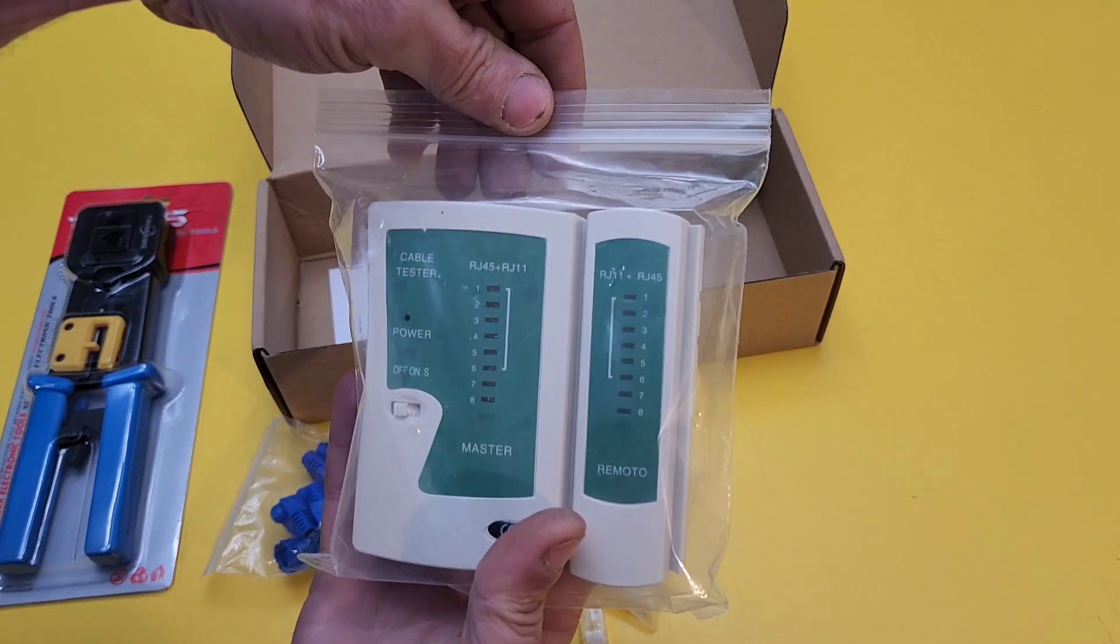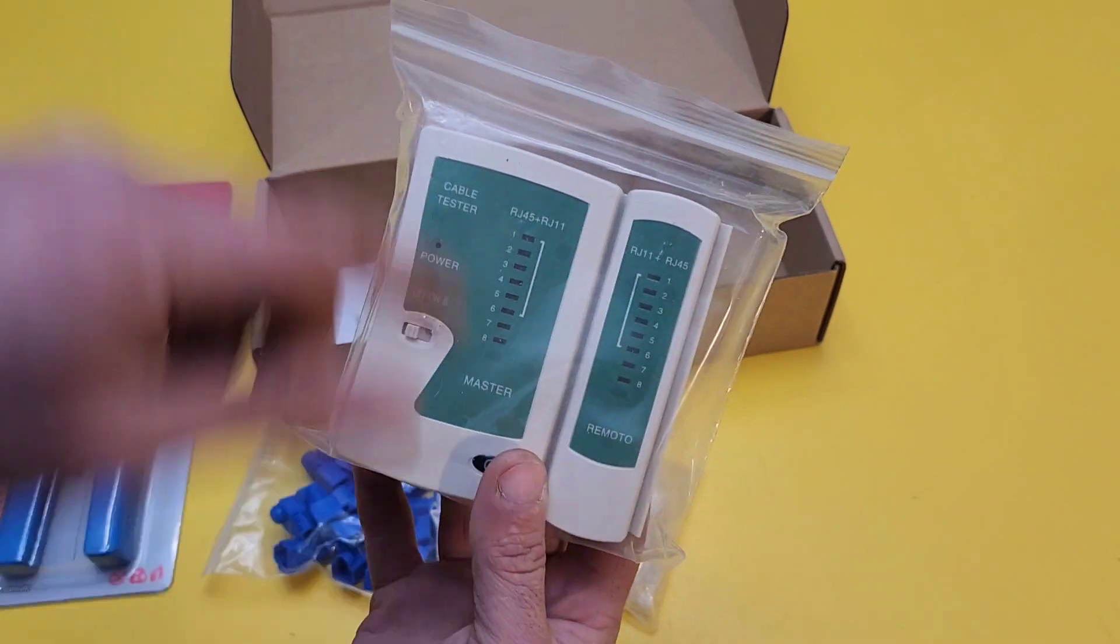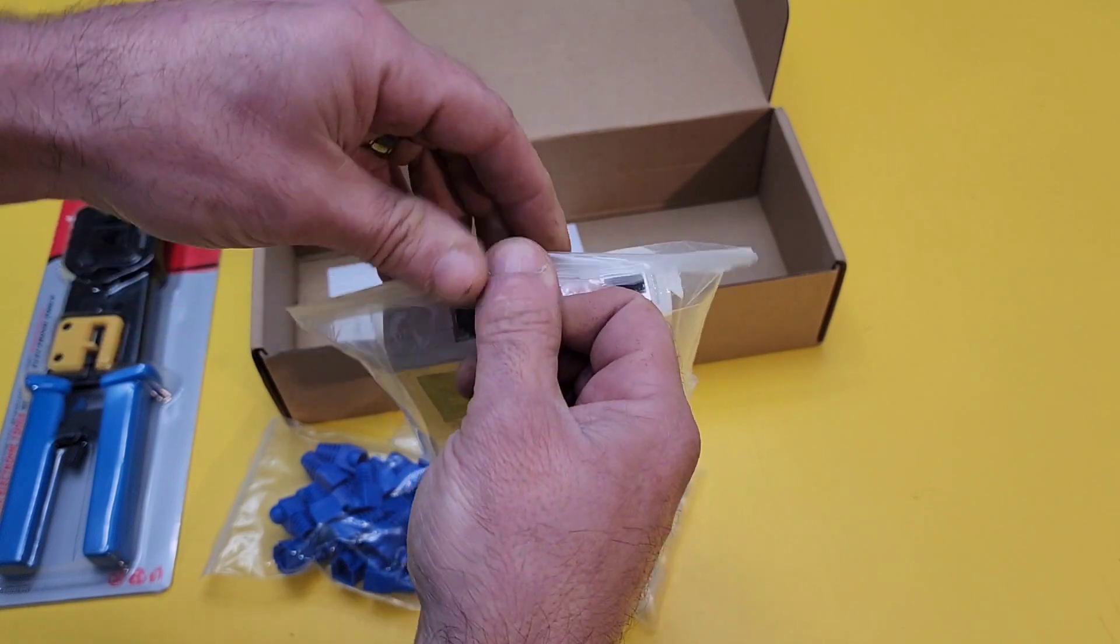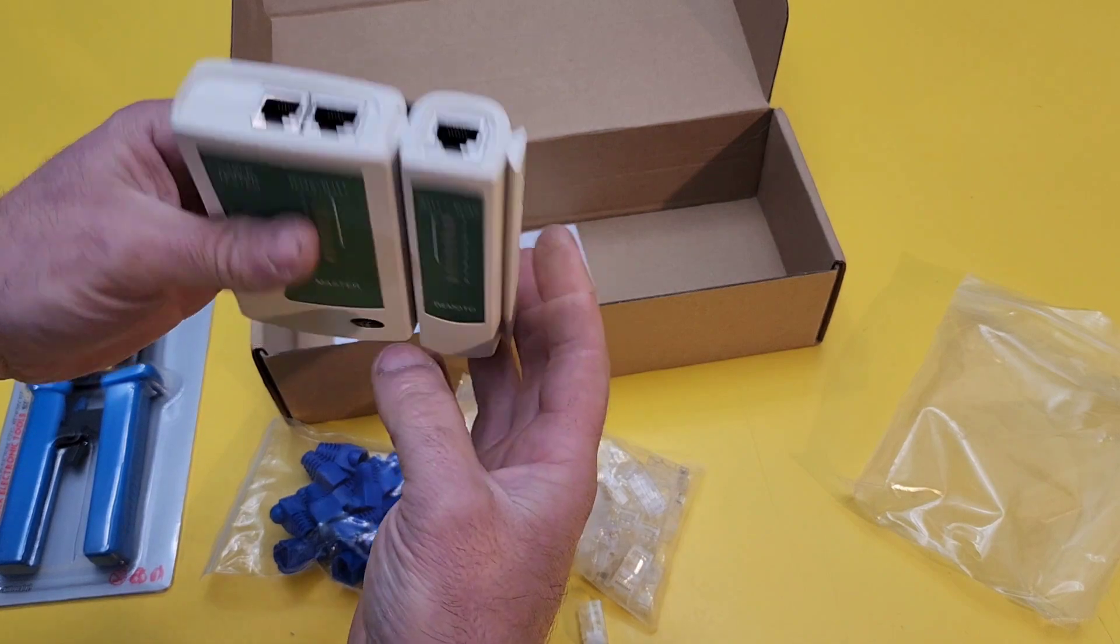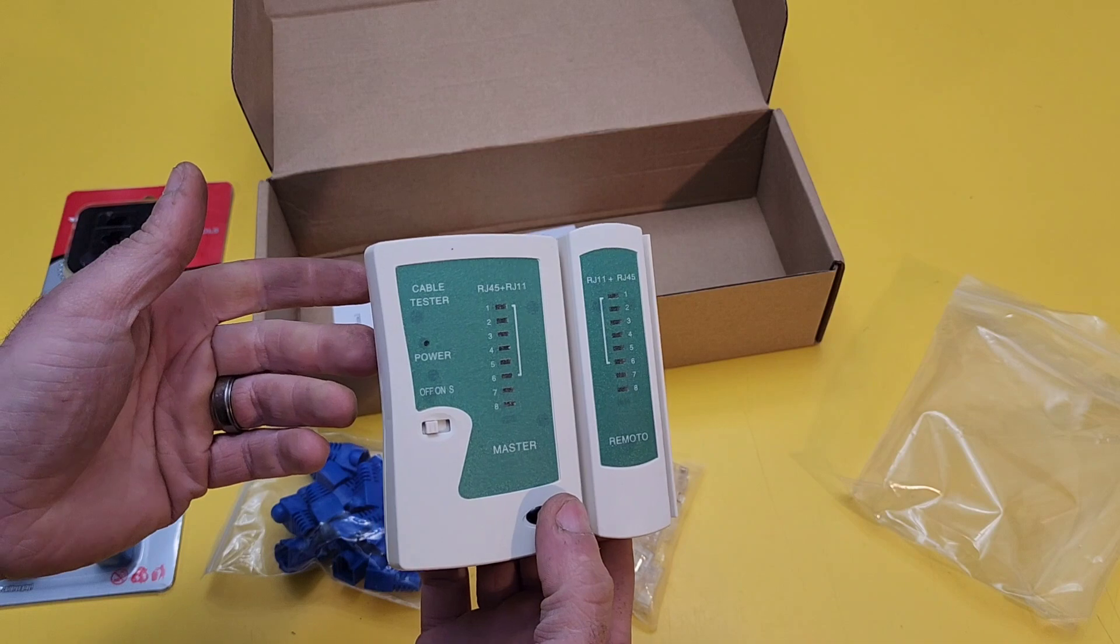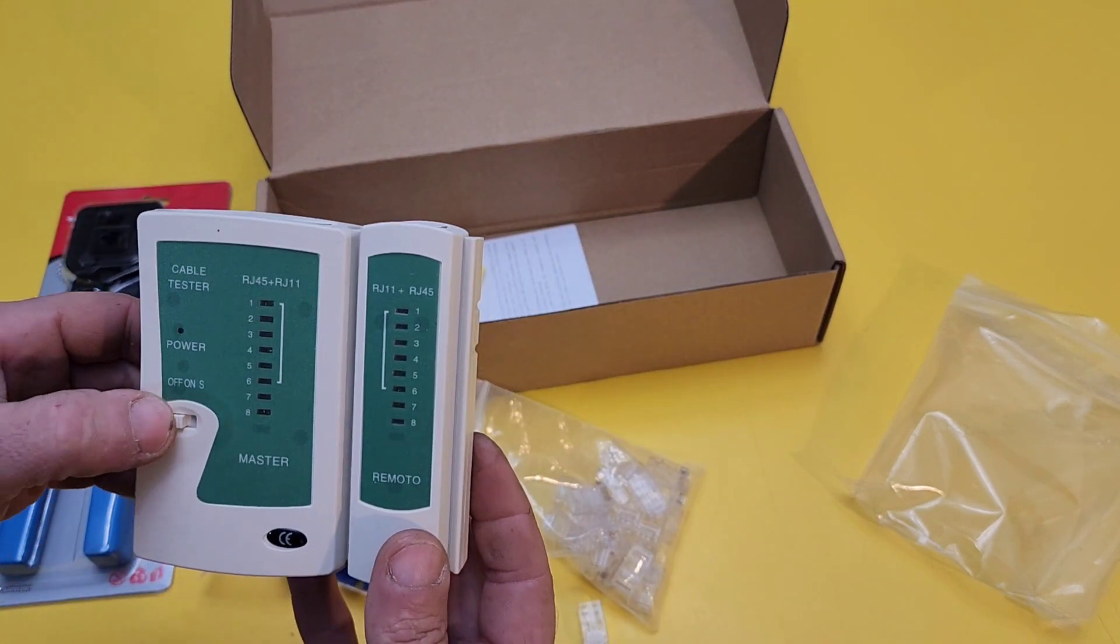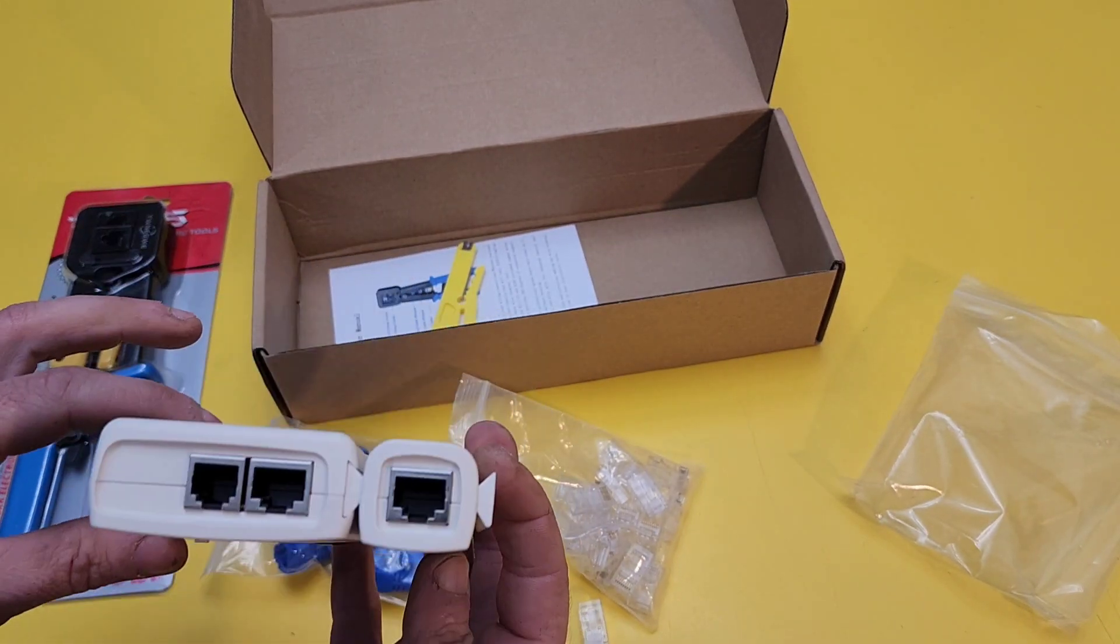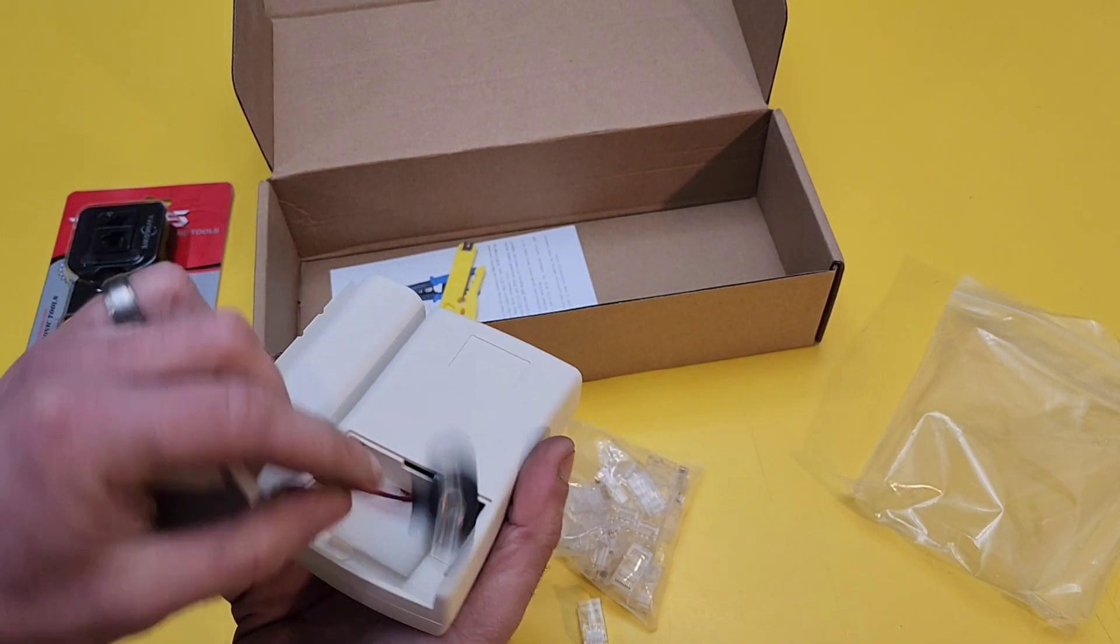Then we've got a tester here. It's both a RJ11 and an RJ45 tester. These are great, especially if you just did a long run of Cat5, Cat6, whatever you're running your Ethernet. And let's say you just ran an IP camera and it's not working and you don't know why, well, you could test the connection and it'll tell you. That's why it's not working. It just takes a 9-volt battery.